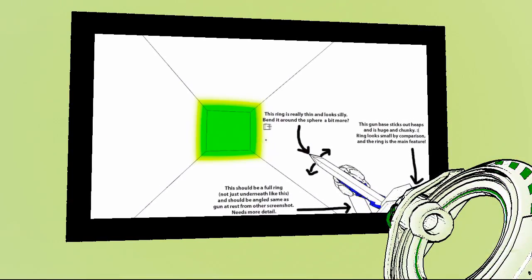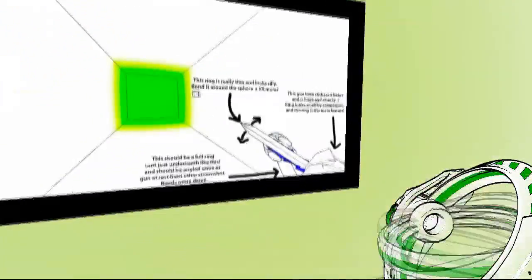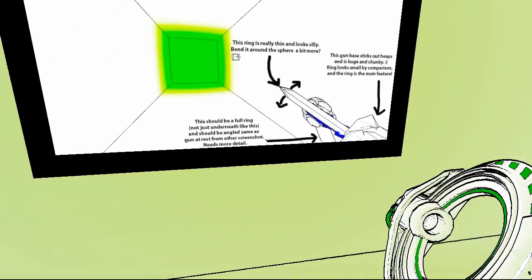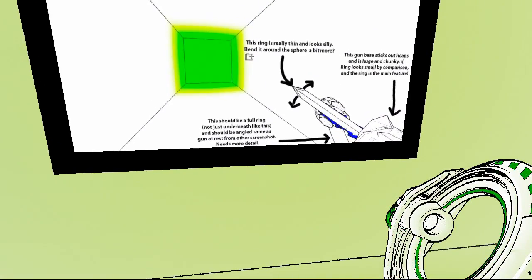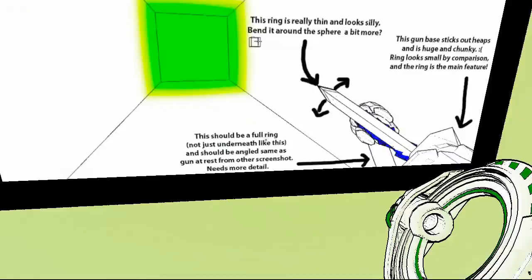Alright, so this is just different designs and their ideas going around, I'm pretty sure. This ring is really thin and looks silly. Bend it more around the sphere? A bit more? Oh, bend it around the sphere a bit more. This gun base sticks out heaps in this huge and chunky... Sad face. Ring looks small by comparison. And the ring is the main feature. Sure is. This should be a full ring. Not just underneath like this. It should be angled same as the gun at rest. Other screen shot needs more detail.